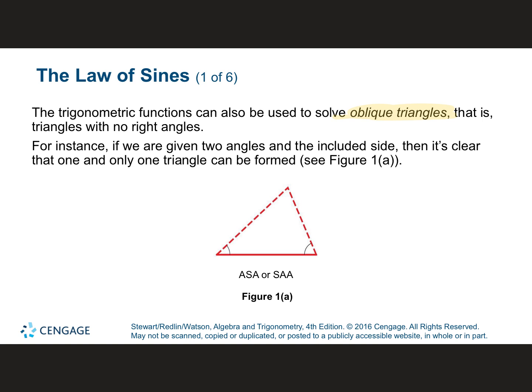An oblique triangle is just a triangle that doesn't have any right angles. Because if you had a right triangle and two side lengths, could you figure out the third? Yes — you would use the Pythagorean Theorem: A squared plus B squared equals C squared. That only works if you have a right triangle. We are not dealing with right triangles; we're dealing with oblique triangles.